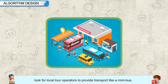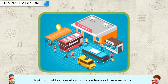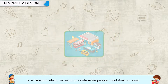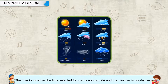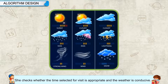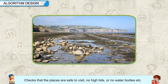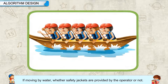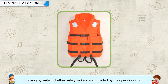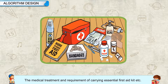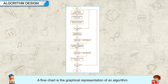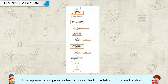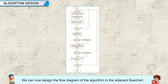For arrangement of local transport, she looks for local tour operators to provide transport like a minibus that can accommodate more people to cut down on cost. For safety and security of all members during the trip, she checks whether the time selected for a visit is appropriate and the weather is conducive, checks that places are safe to visit with no high tide or dangerous water bodies, checks whether safety jackets are provided by the operator if moving by water, and considers medical treatment and the requirement of carrying an essential first aid kit. A flowchart is the graphical representation of an algorithm and gives a clear picture of finding a solution for the said problem.